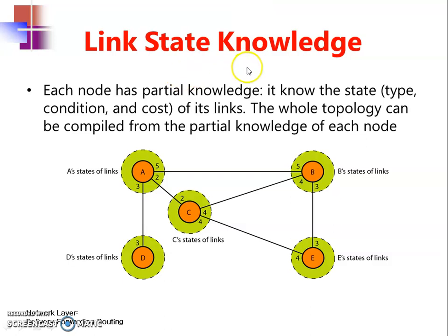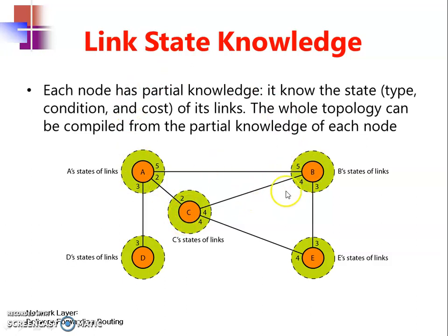What is the link state knowledge? Link state knowledge is related to the condition and cost of the link, and the whole topology can be compiled from the partial knowledge of each node. The entire knowledge is shared with all the routers present on the network — not only neighbors but all nodes of the network.